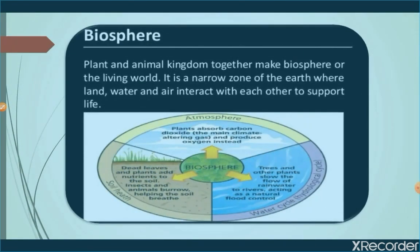The next sphere is the biosphere. Plants and animal kingdoms together make the biosphere, or the living world. It is a narrow zone of earth where land, water, and air interact to support life — life exists in the biosphere only. In the atmosphere, plants absorb carbon dioxide and produce oxygen. In the hydrosphere, trees slow the flow of rainwater to rivers, acting as natural flood control. In the lithosphere, dead leaves and plants add nutrients to the soil, and insects and animals burrow, helping the soil. The biosphere is very important for the existence of life.